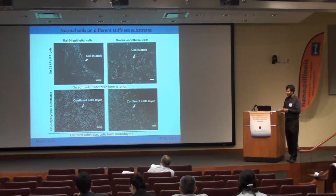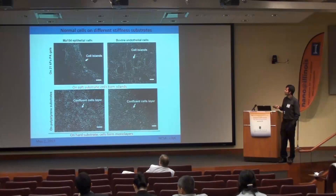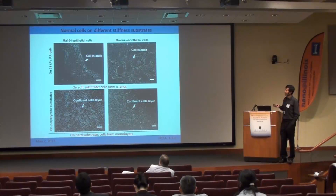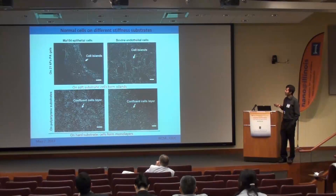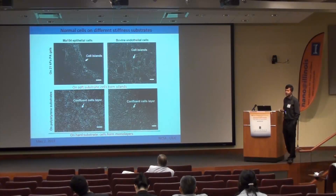With the control healthy cells — epithelial and endothelial cells — they also form islands and confluent layers on gels and dishes respectively, similar to HCT8 cells. However, neither on gels nor on hard substrate do they show this phenotype transition or rounded variants.